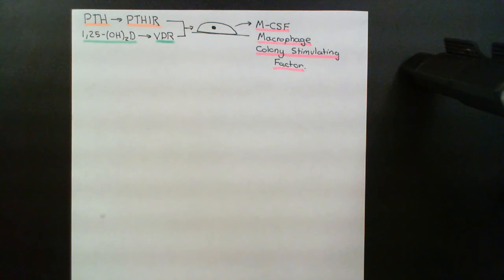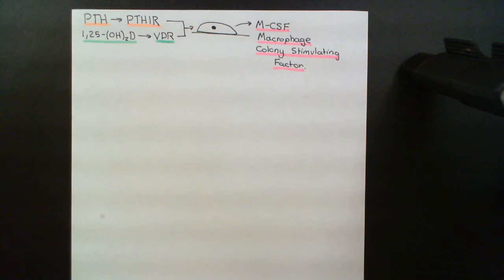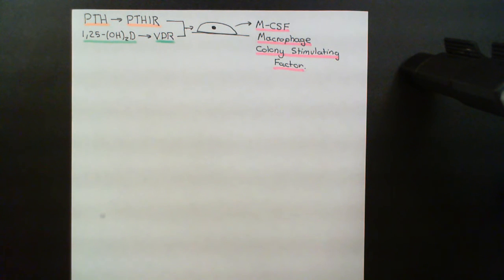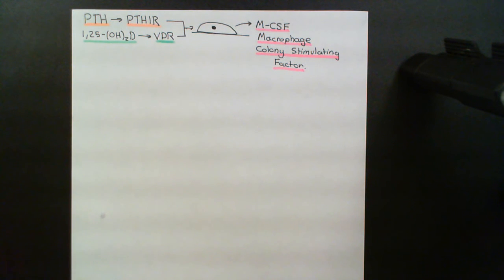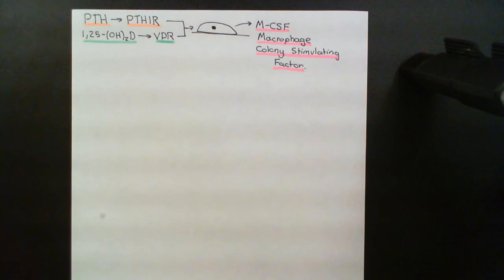That explains why we release macrophage colony-stimulating factor — which you may have encountered in studying inflammation or the immune system — as a molecule that stimulates the hematopoietic system to produce immune cells. Pre-osteoclasts are going to come from those same cells.